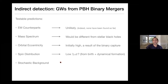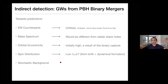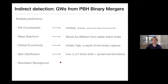Another signature is the stochastic background. Beyond the events that are individually detected, there's a host of sub-threshold events forming a stochastic background. Events are happening all the time below threshold, but their overall contribution still exists in all detector signals. If you correlate the detector time streams, you can find this correlated signal and detect the stochastic background.